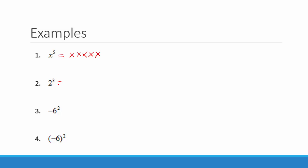2 to the third power means 2 times 2 times 2. We can simplify this: 2 times 2 is equal to 4, and 4 times 2 is equal to 8. So 2 to the third is equal to 8.